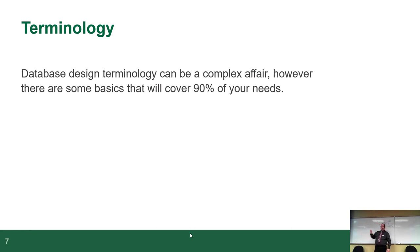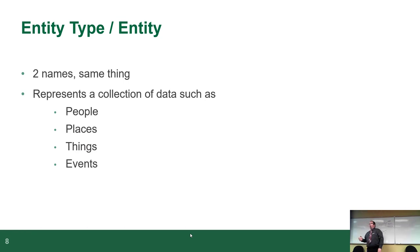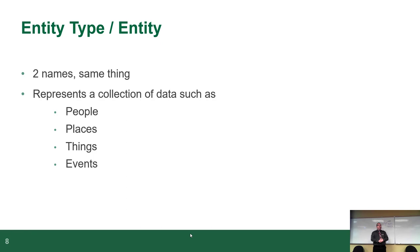Now, some more terminology. Database design terminology is really complex, but today's lecture will cover the basics that will cover you for 90% of your needs. The first big concept — and this one shows up on tests and exams — is something called an entity type, usually just abbreviated to 'entity.' The database industry gives multiple names to the same thing; entity type and entity mean the exact same thing for all intents and purposes.